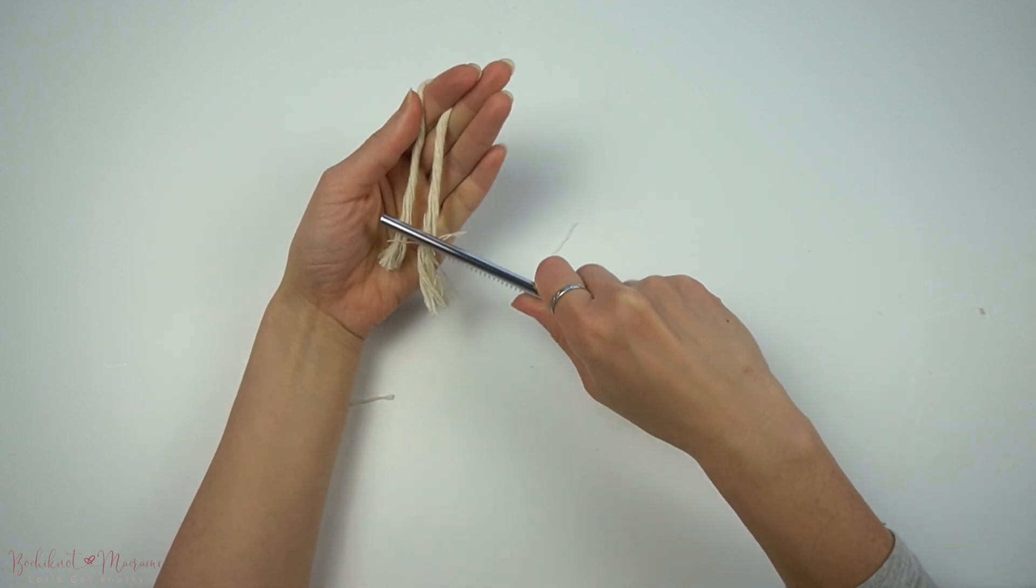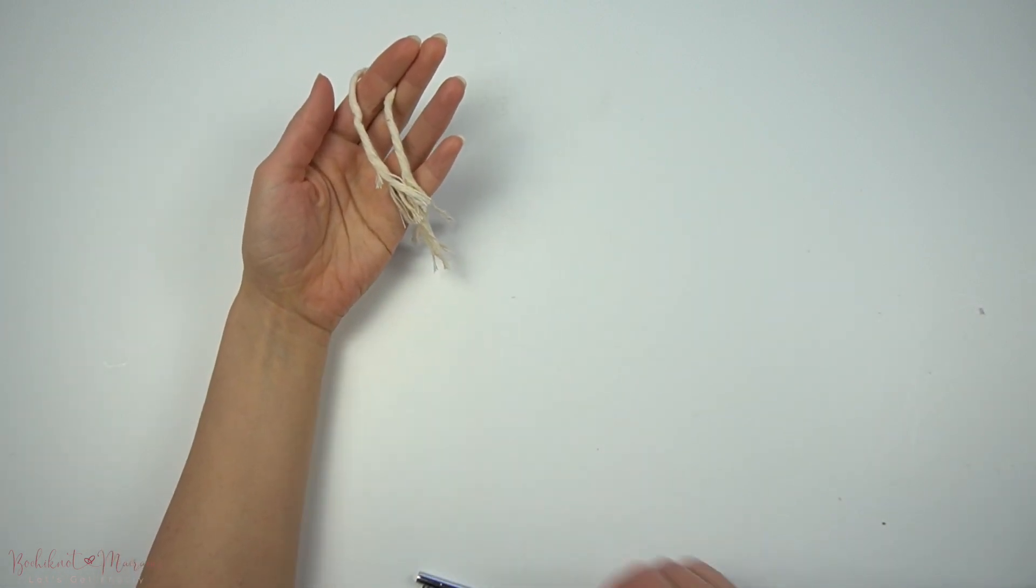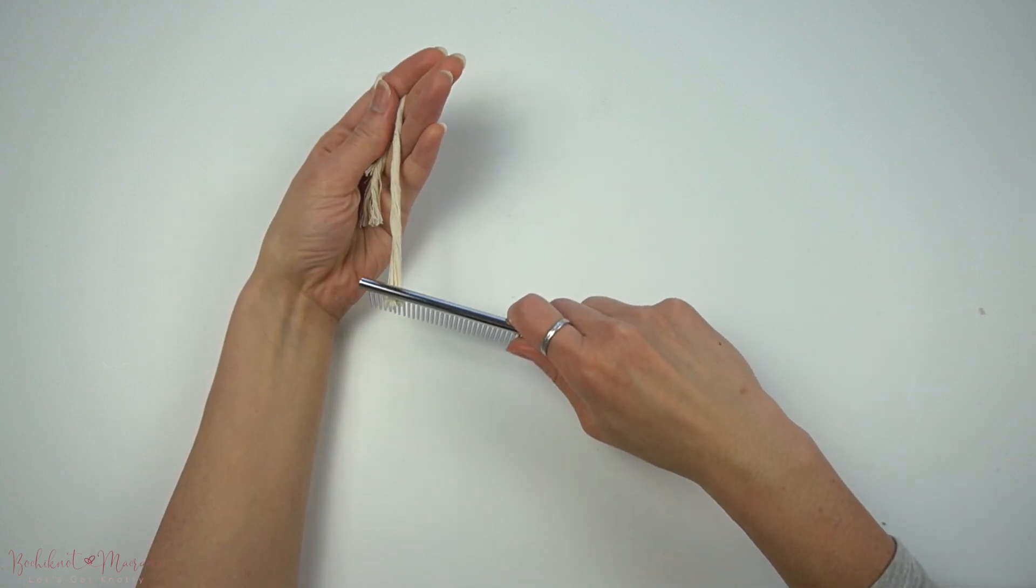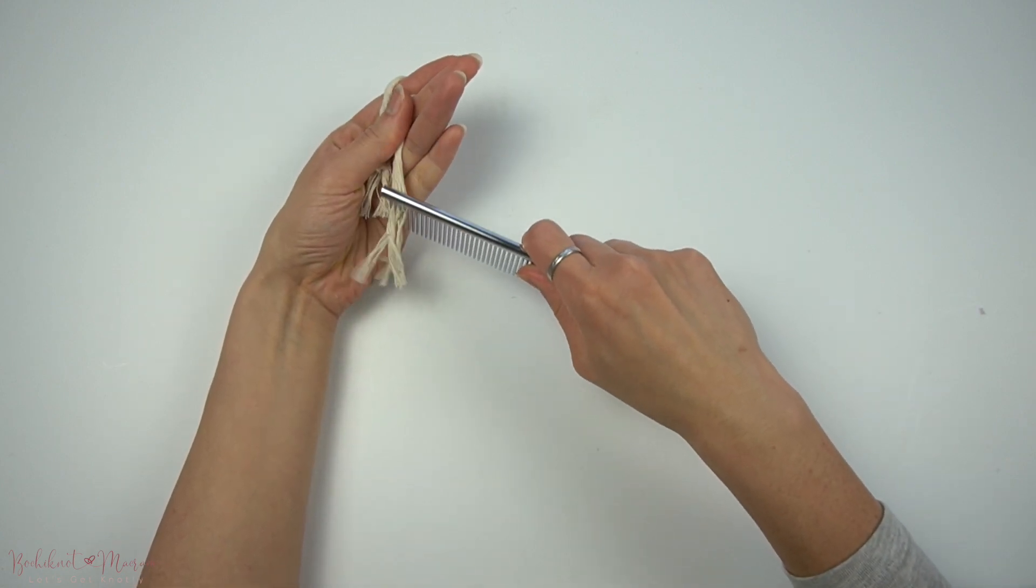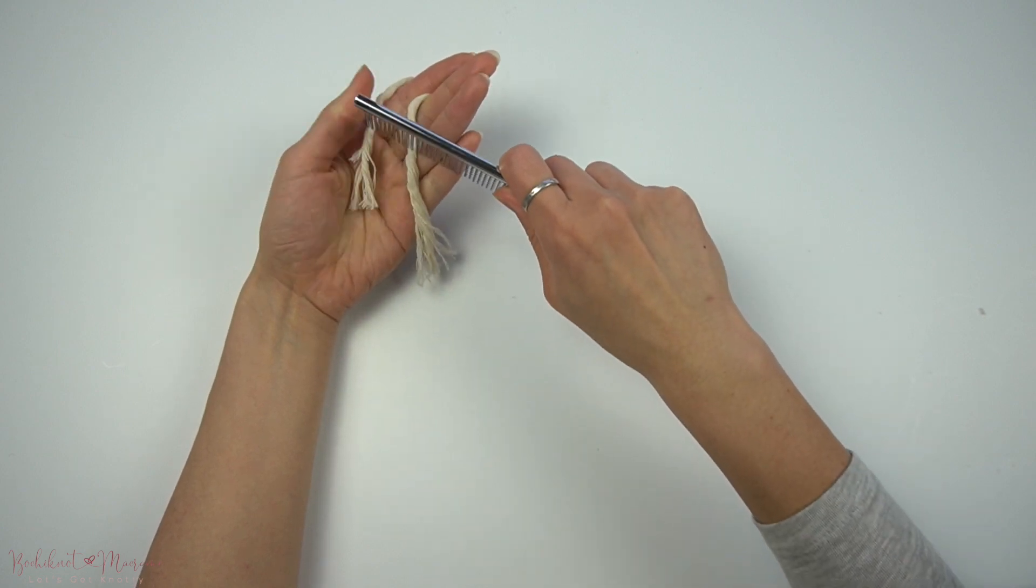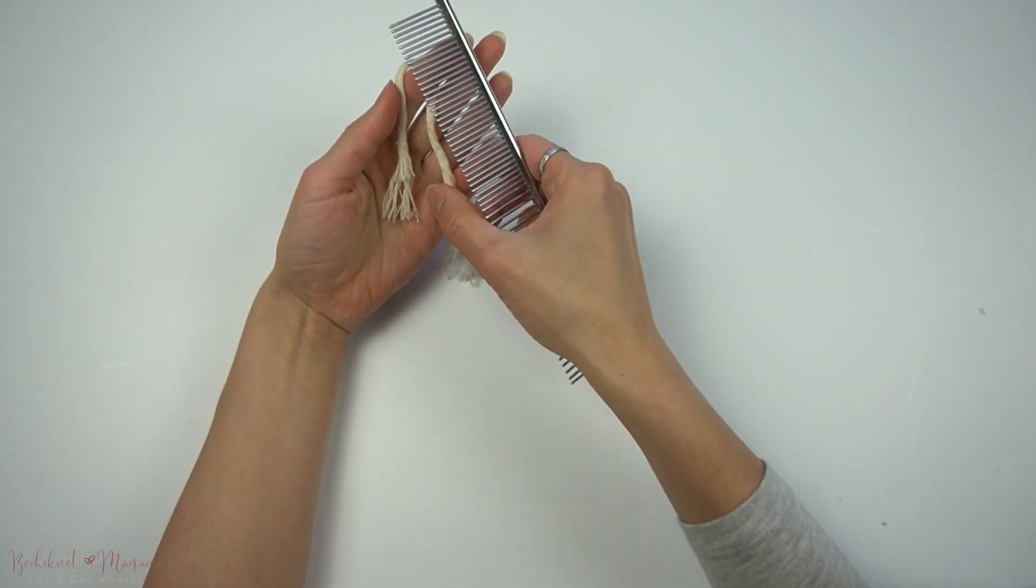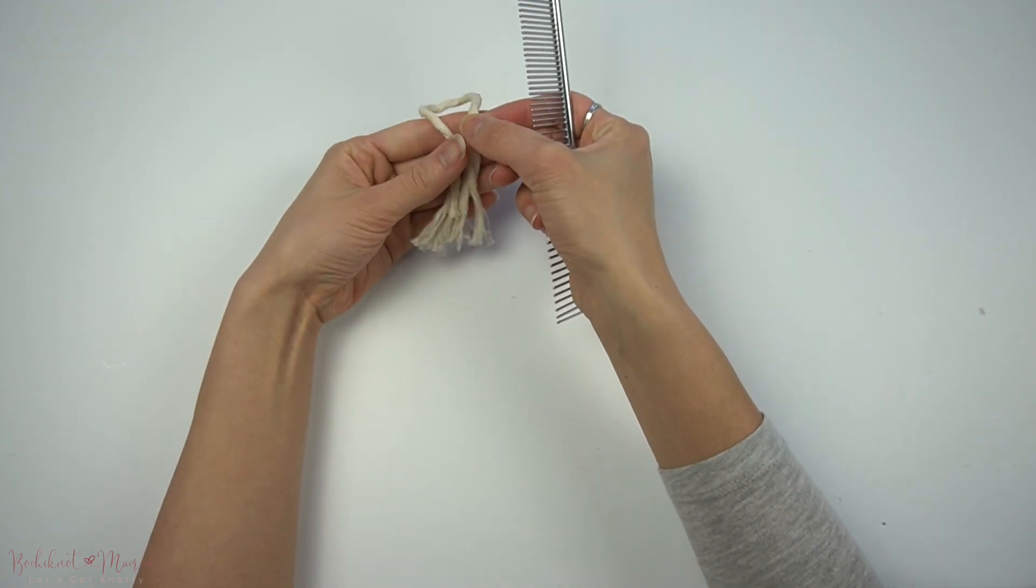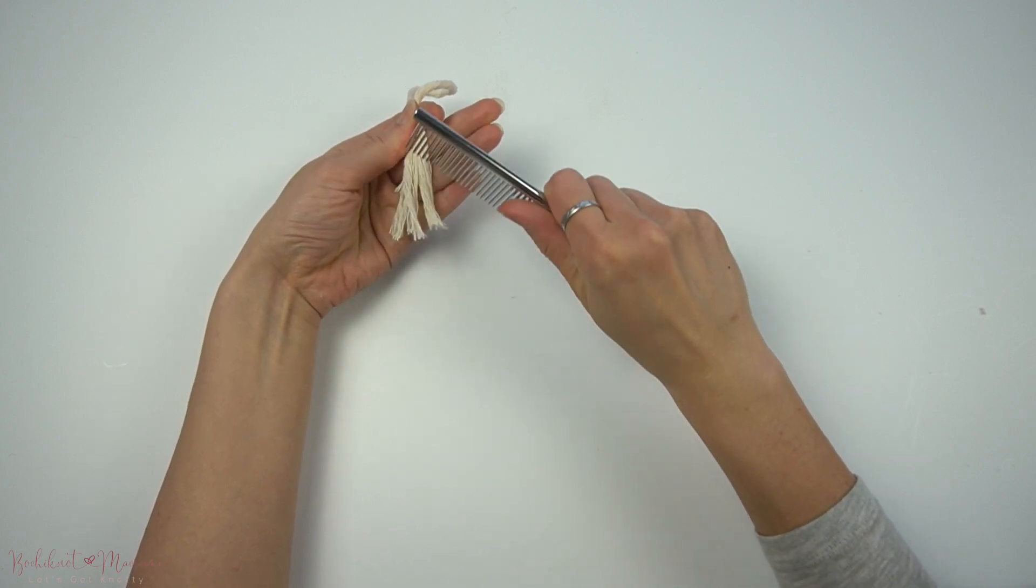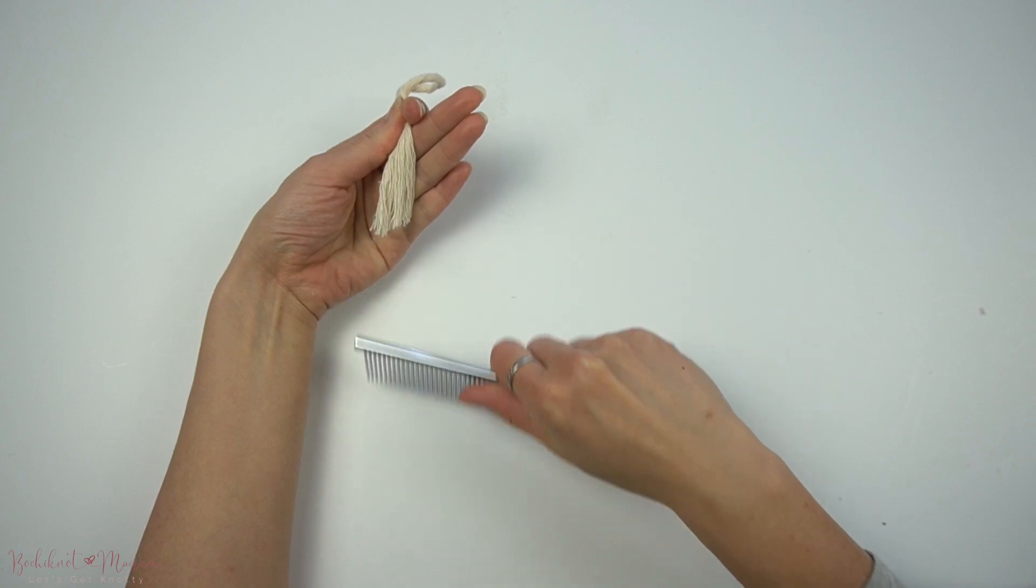When I first started out with macramé, I used a plastic hair comb that I had in my home to brush through the fringe, and while it does the job, it's not the best and most effective way to comb through fringe. It also depends on the type of cord you have as well. If your cord gets tangled very easily, then having a sturdy stainless steel comb like the one I have is super helpful.